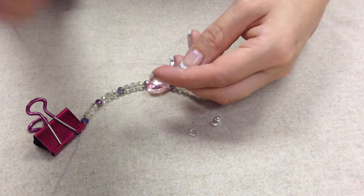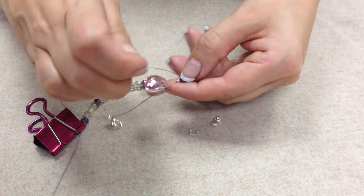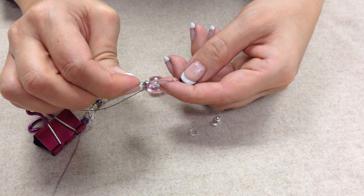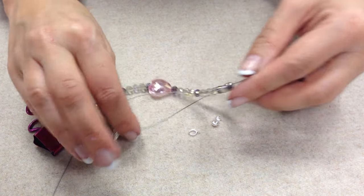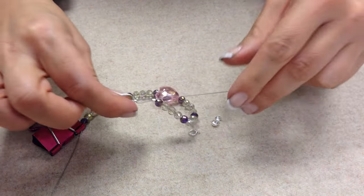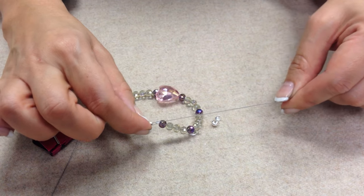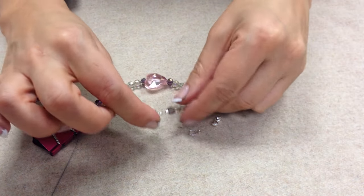Then take the end of your beading wire and pass it back through the crimp tube. Take it all the way along and pass all of the excess beading wire through.